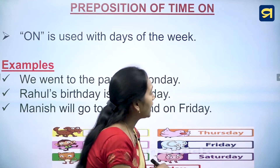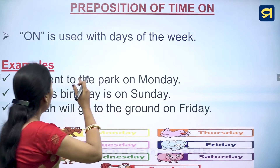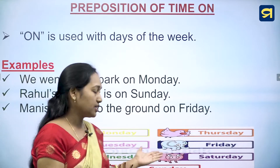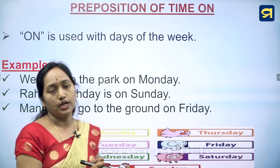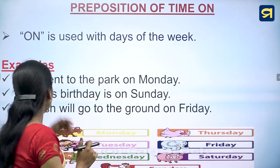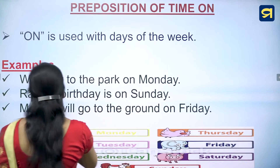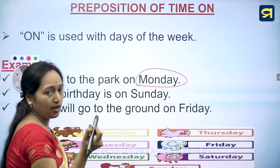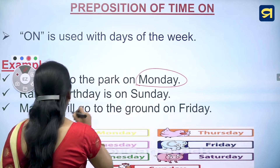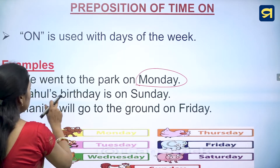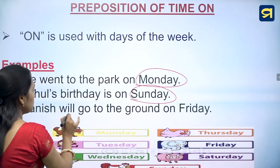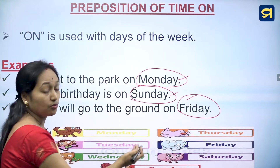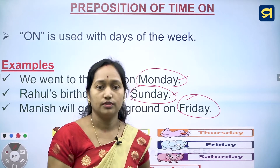Preposition of time 'on'. 'On' is used with days of the week — Sunday, Monday, Tuesday, Wednesday, and so on. For example: we went to the park on Monday, Rahul's birthday is on Sunday, and Monies will go to the ground on Friday.